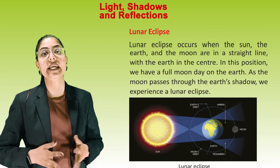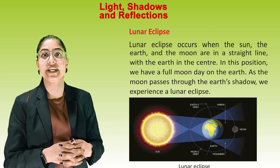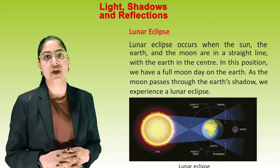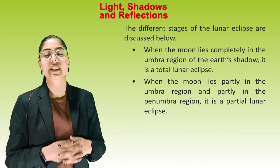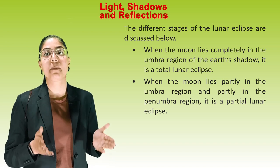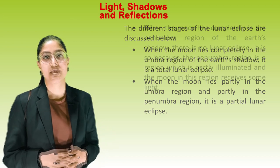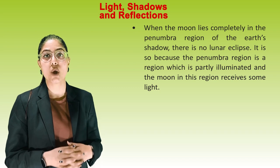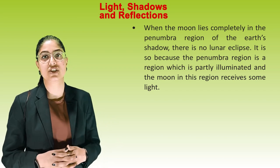Lunar eclipse. A lunar eclipse occurs when the sun, the earth, and the moon are in a straight line with the earth in the centre. In this position, we have a full moon day. As the moon passes through the earth's shadow, we experience a lunar eclipse. When the moon lies completely in the umbra region of the earth's shadow, it is a total lunar eclipse. When the moon lies partly in the umbra and partly in the penumbra, it is a partial lunar eclipse. When the moon lies completely in the penumbra region, there is no lunar eclipse, because the penumbra is a region which is partly illuminated and the moon receives some light.